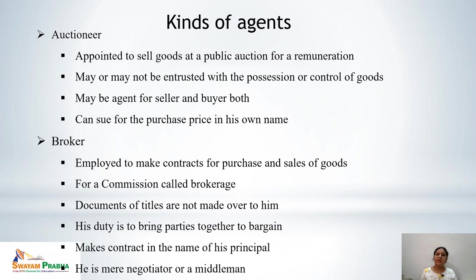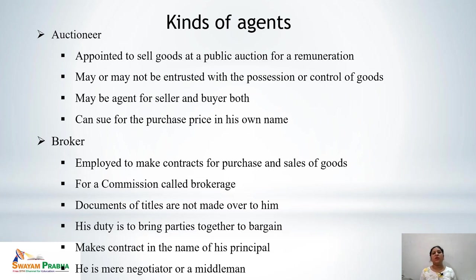The next mercantile agent is the auctioneer, who sells goods through auction. The auctioneer may be appointed by the seller or the buyer to sell goods at a public auction and is paid remuneration for this. It is not necessary that goods must be in his possession or control, but he can sue for the purchase price in his own name. Next is the broker, who is employed to make contracts for purchase and sale of goods and is paid a commission called brokerage. Documents of title are not made over to him; his only duty is to bring buyer and seller together to bargain, making contracts in the name of the principal.